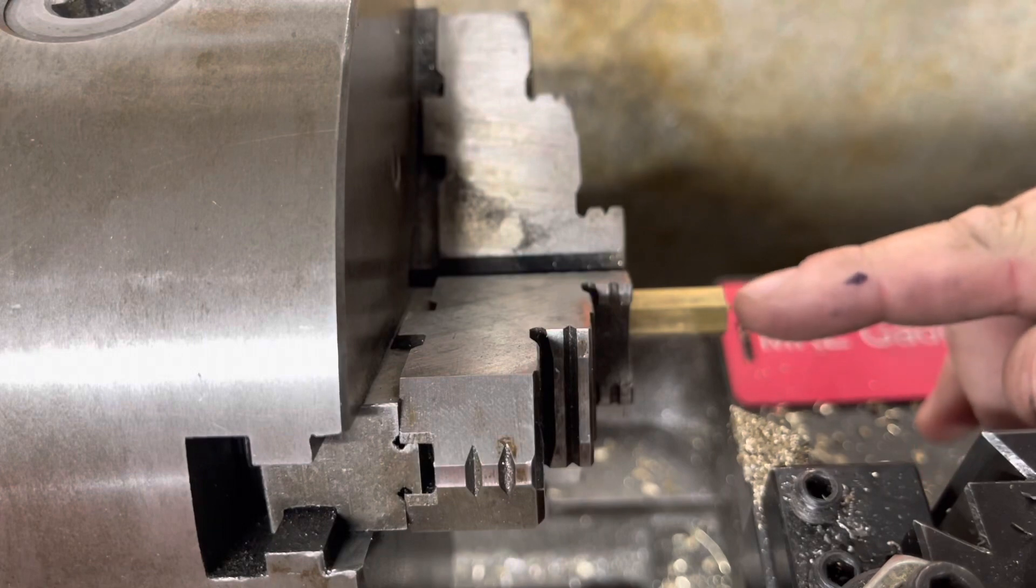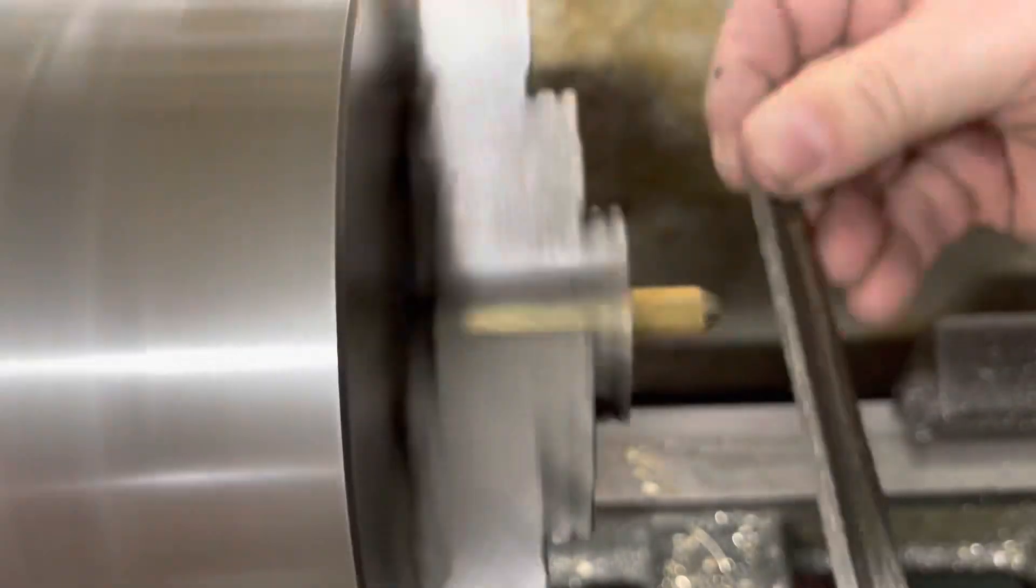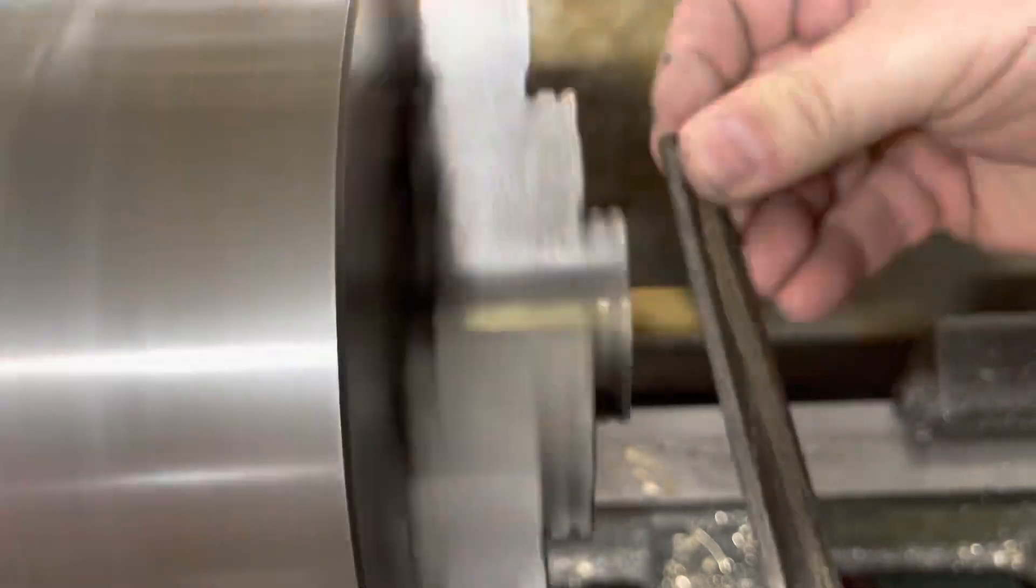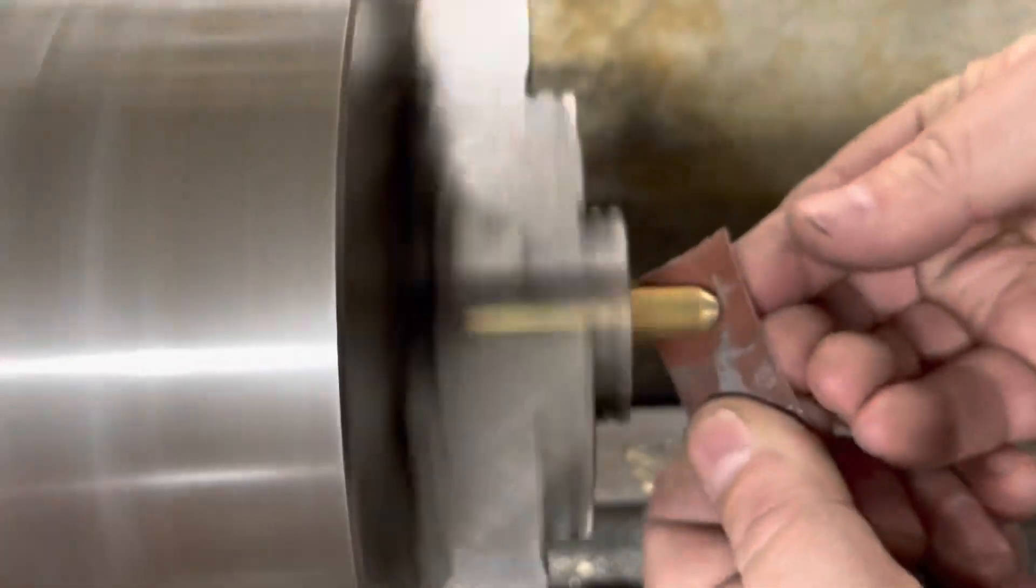We'll go in there and we'll face this off, and we'll come back with a chamfer tool, put a big chamfer on there, and then we'll file a nice radius in there.